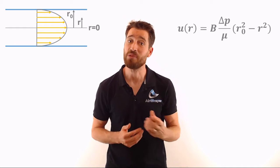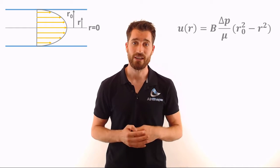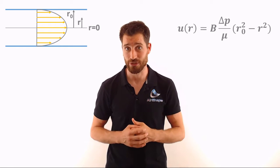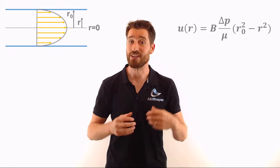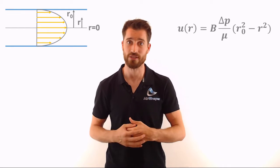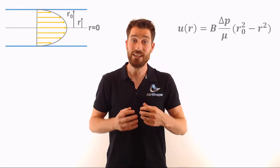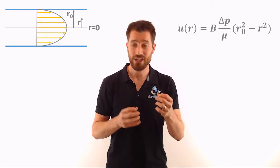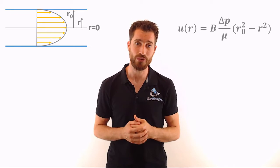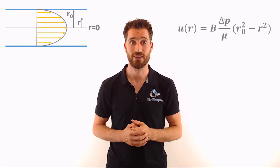Now for very simple problems, like laminar flow through a cylindrical pipe, there are analytical solutions. The entire flow field can be described using continuous mathematical functions. These allow you to calculate the pressure and the velocity at any given point within the flow field, at an infinite resolution. But for anything more complex than these very simple cases, we don't have the analytical solution.